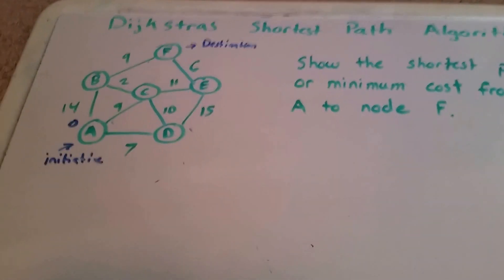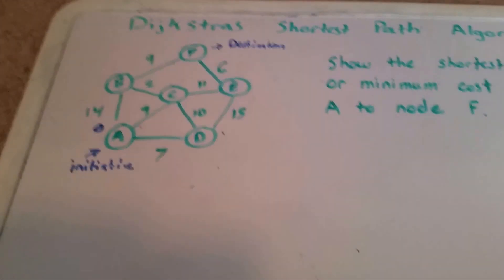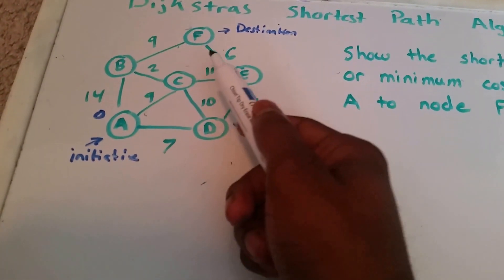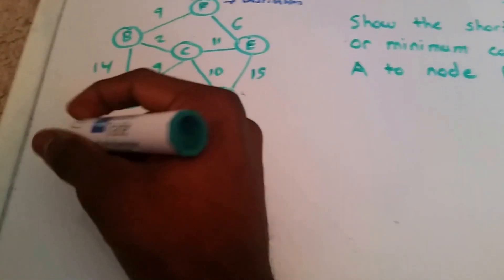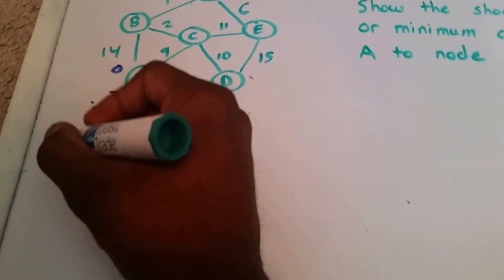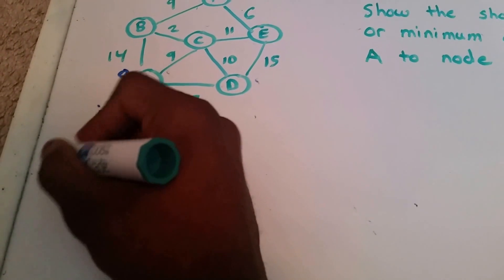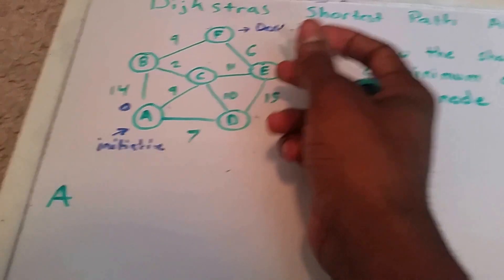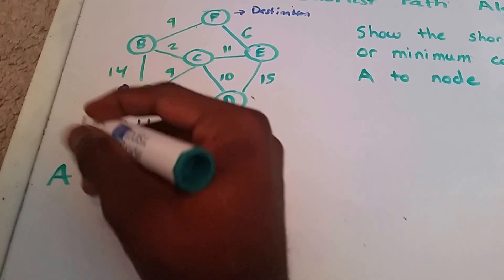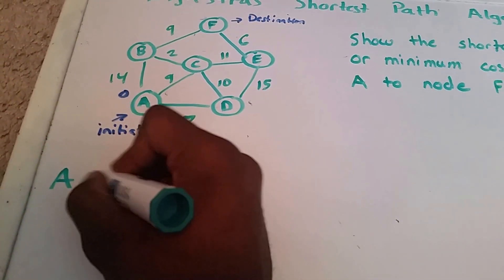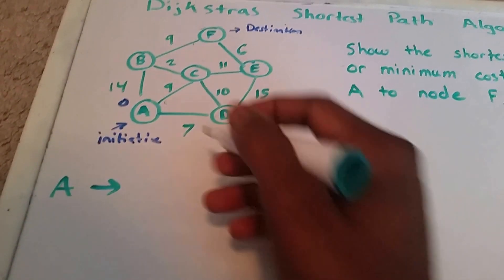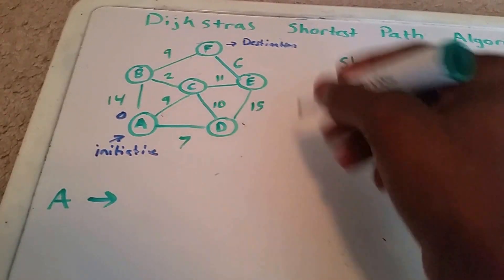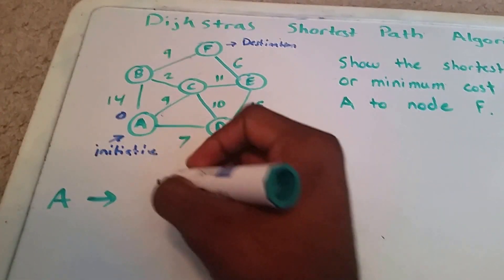So what we want to do is go from A to F. Our initiative node is A and our destination node is F. We're going to go from A to possibly all these other nodes here: B, C, D, E, and F.